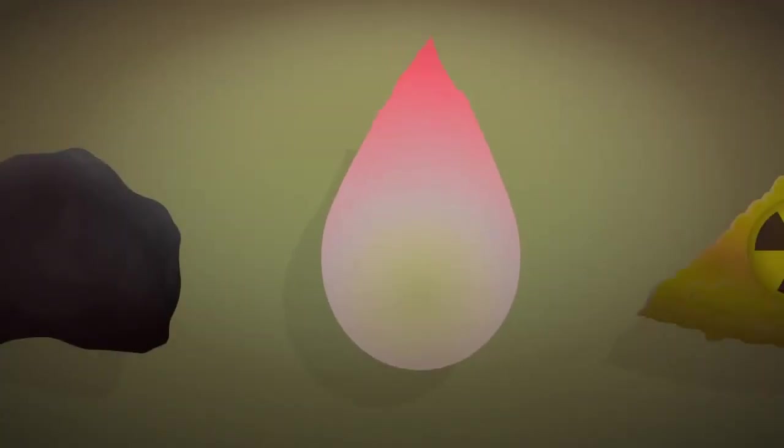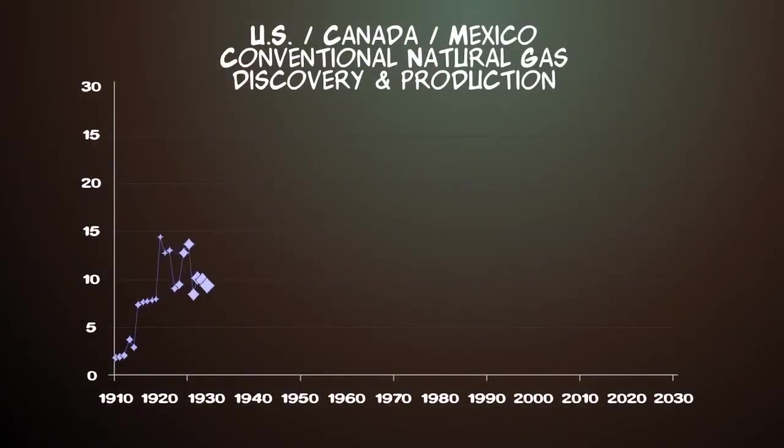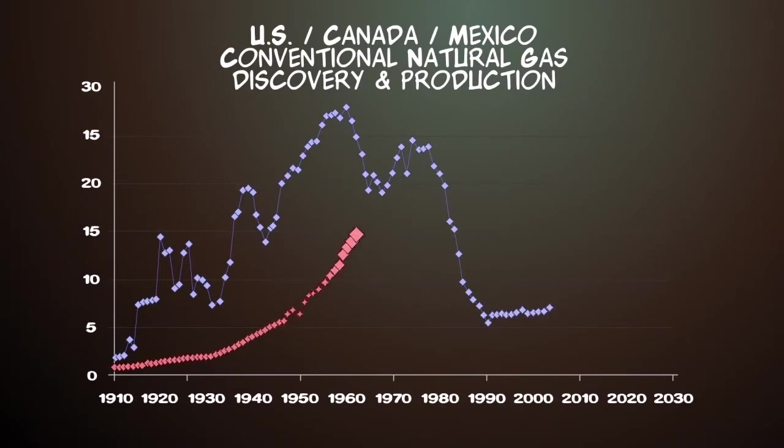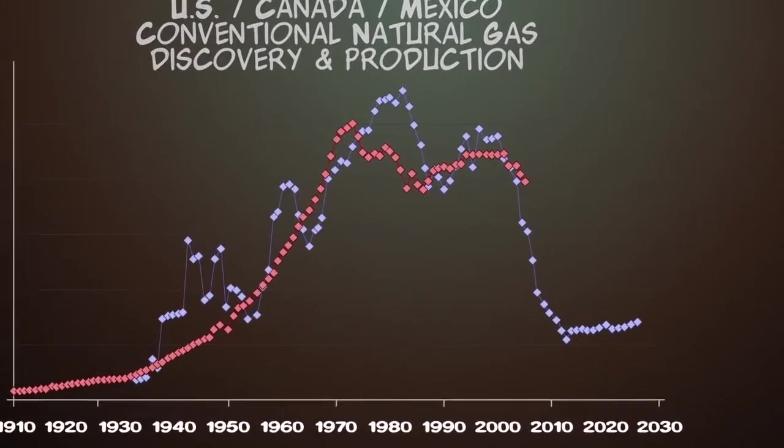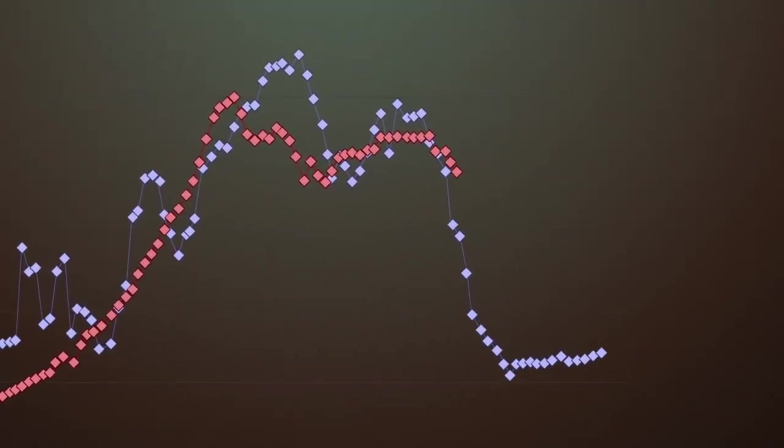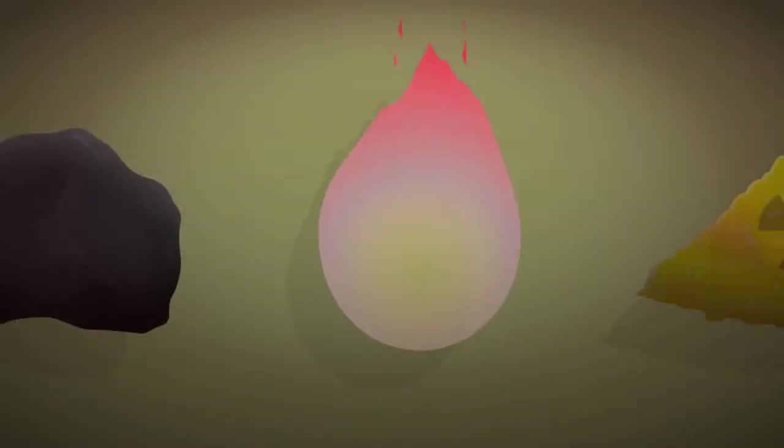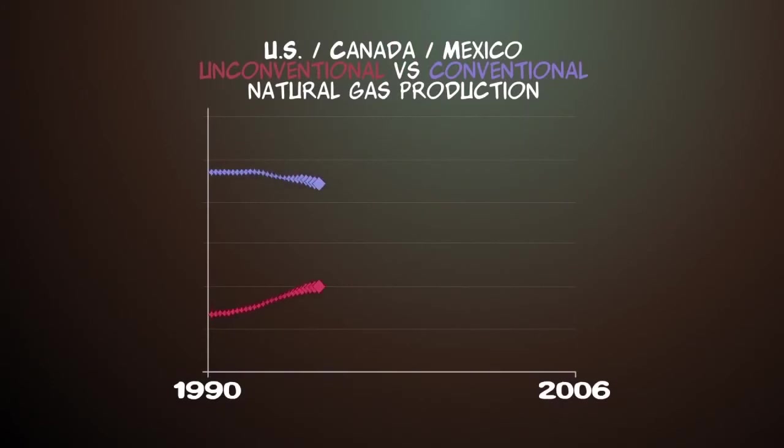Natural gas is often found alongside oil and coal. North American discovery of conventional gas peaked in the 1950s and production peaked in the early 70s. If the discovery graph is moved forward by 23 years, the possible future of North American conventional natural gas production is revealed. Recent breakthroughs have allowed the extraction of unconventional natural gas, such as shale gas, which might help offset decline in the years ahead.